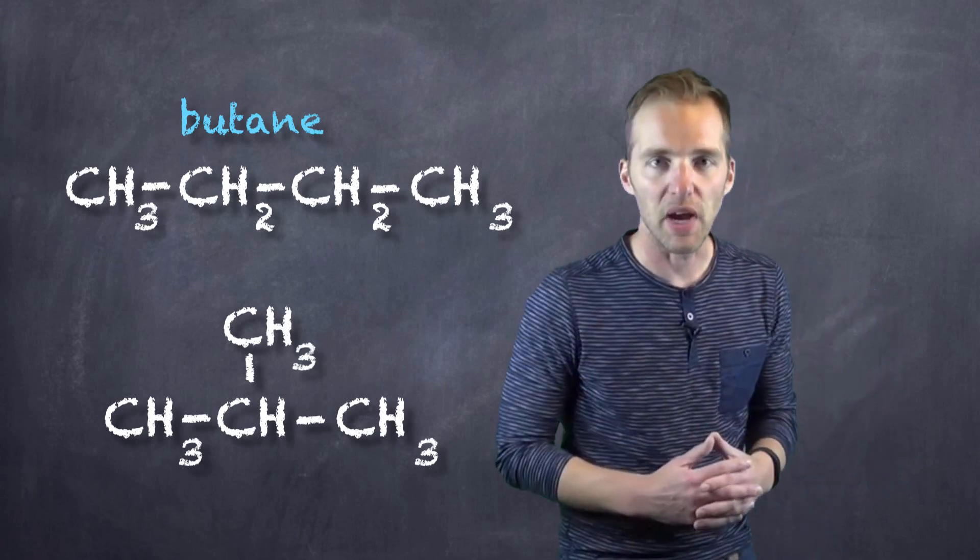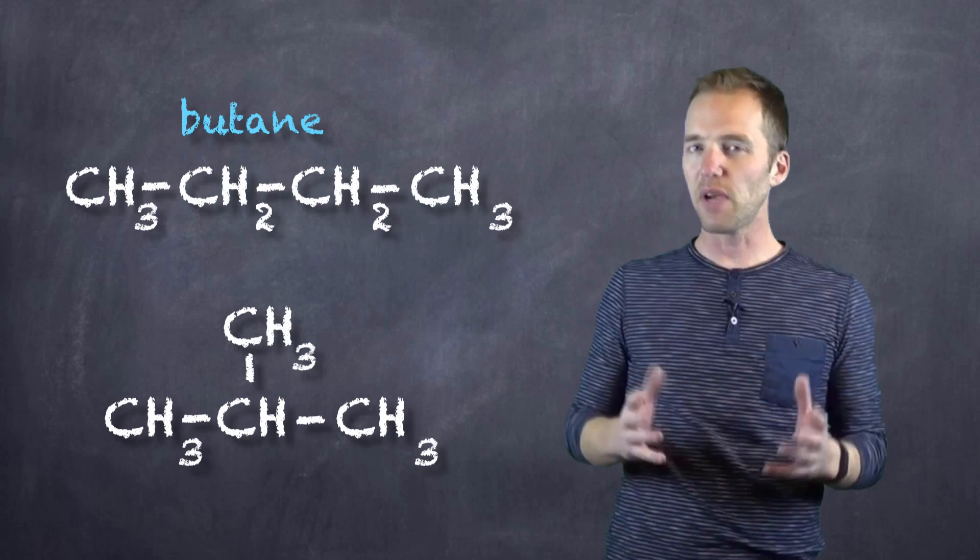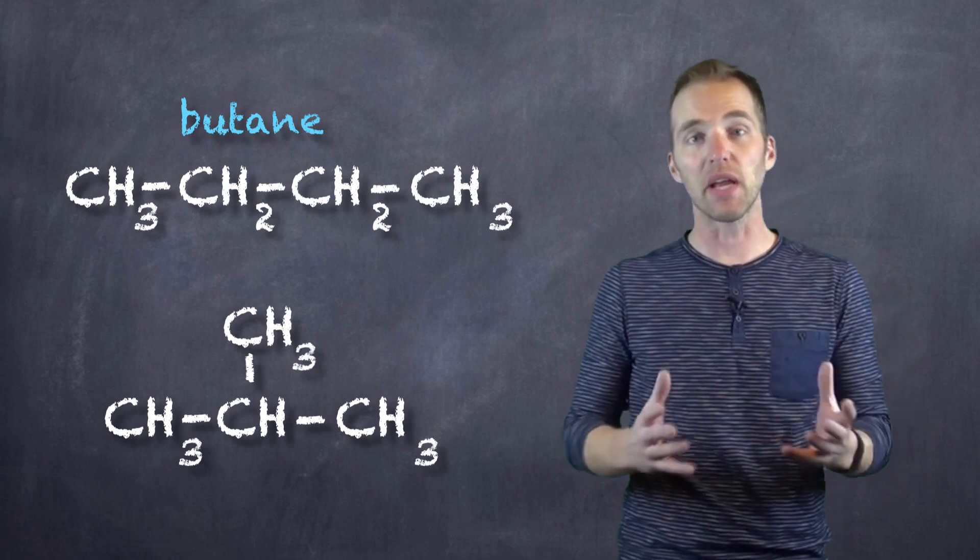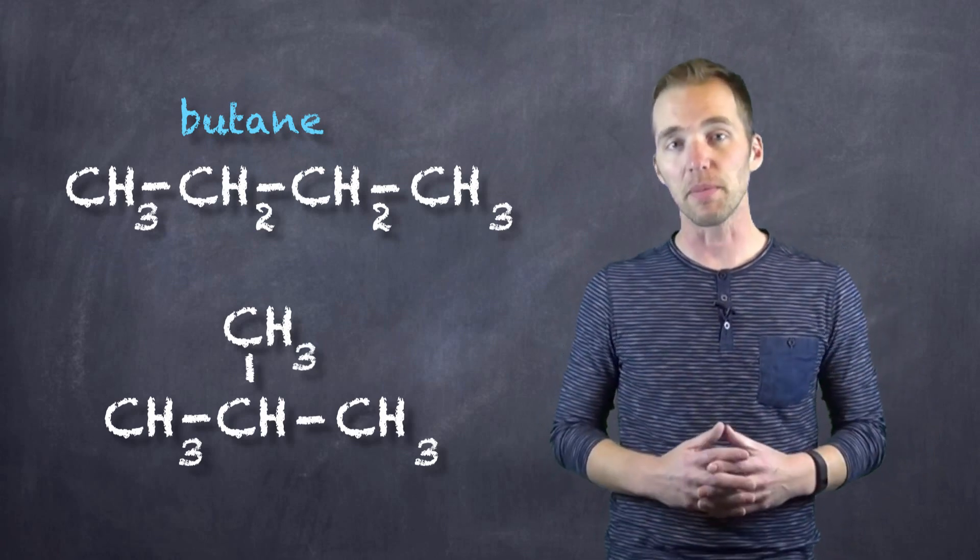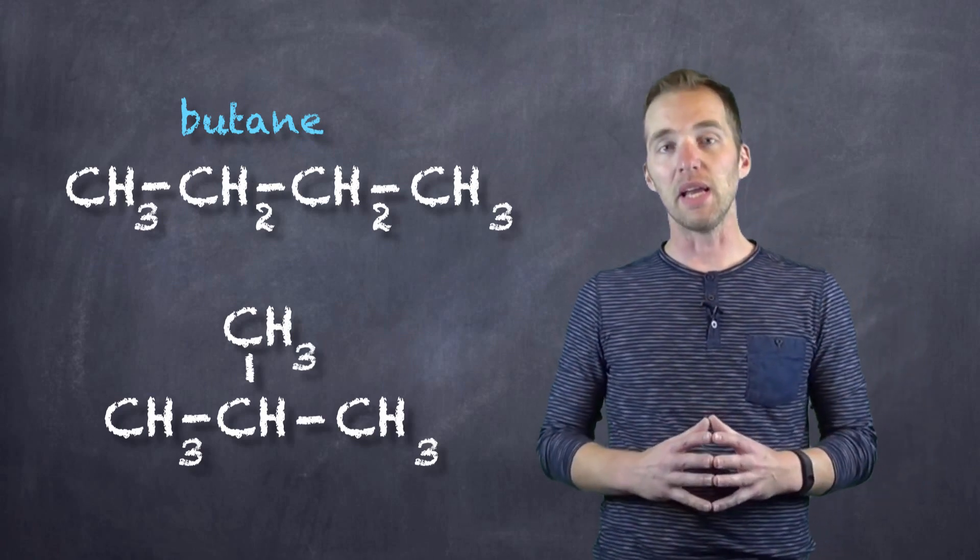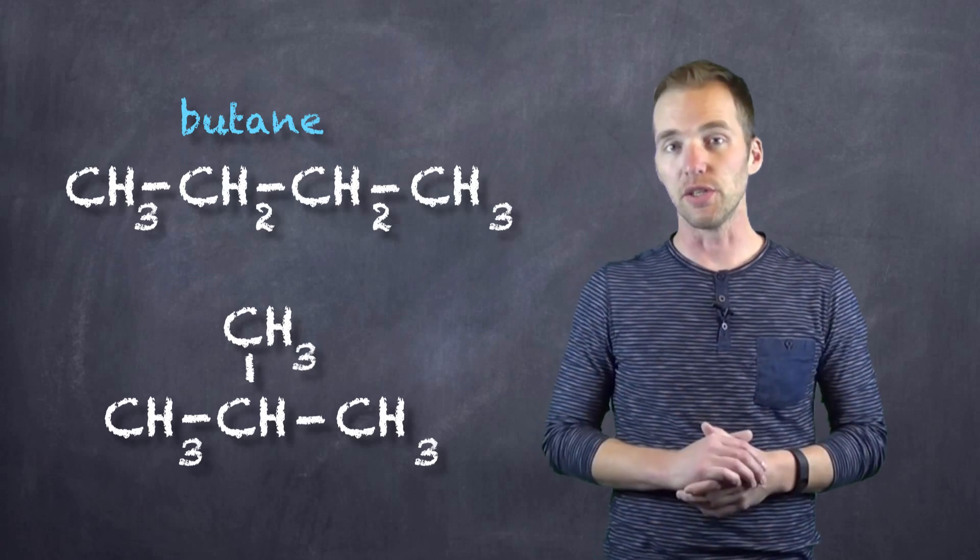This is what we classify as a branched-chain alkane. Now I think it's fairly straightforward to see why we call it a branched-chain alkane. It's an alkane. Remember, alkanes have single bonds or a single line drawn between all adjacent carbons, and it's branched because there is a branch or a carbon coming off of a longer continuous chain.